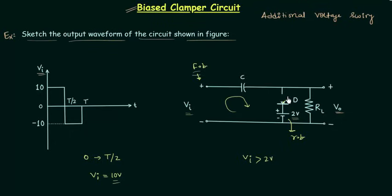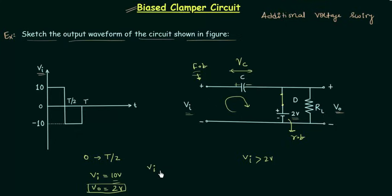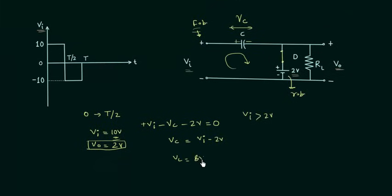I will replace the diode with its equivalent model. I am considering the case of an ideal diode, so we have a short circuit as the equivalent model. The output voltage Vo is simply equal to 2 volts. Now I will calculate the voltage across the capacitor C, let's call it Vc. This plate is connected to the positive terminal so it will have positive charge, and this plate is connected to the negative terminal so it will have negative charge. Applying Kirchhoff's voltage law: Vi − Vc − 2V = 0, so Vc equals 8 volts. The capacitor is now charged with 8 volts.